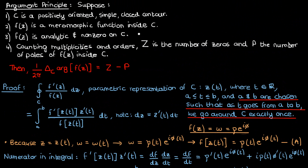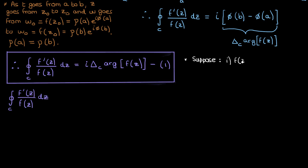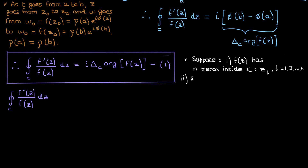Going back to the assumptions of the theorem, f of z is analytic and non-zero on the contour C, but meromorphic inside it. Suppose that f of z has n zeros inside the contour C, denoted by z_i where i is an index from 1 to n — note that i here is an index, not the imaginary number. We'll also suppose that f has p poles inside the contour C, denoted by z_j where j varies from 1 to p. We're allowed to have poles inside the contour because f is meromorphic inside, giving it a finite number of discontinuities, but we can't have poles on the contour itself.